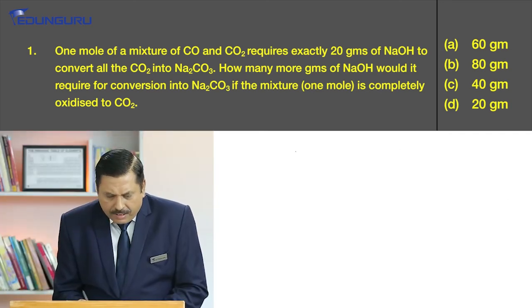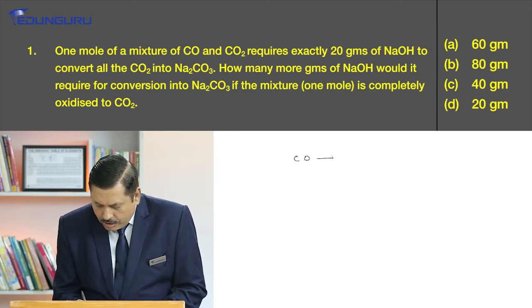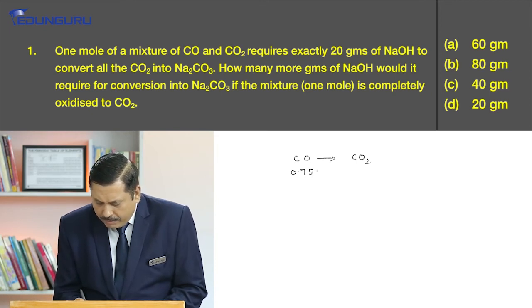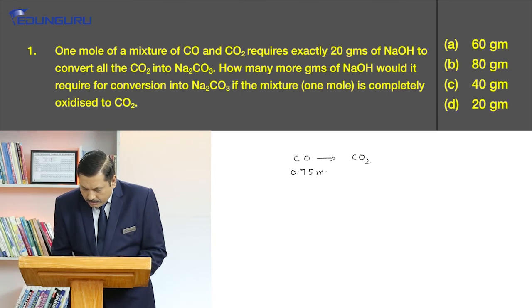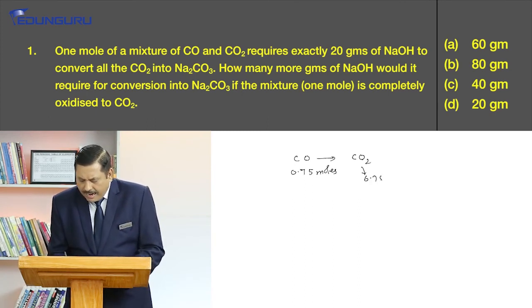The question says that one mole of the mixture is completely oxidized and converted to carbon dioxide. So finally, I will have CO getting converted to CO2, and since we have 0.75 moles of carbon monoxide, we will have 0.75 moles of carbon dioxide also.